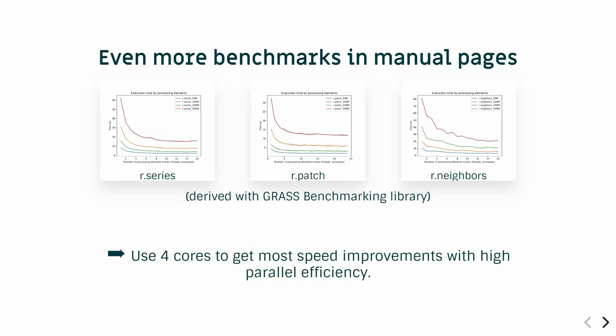There are even more benchmarks in the manual pages of the tools I showed earlier — feel free to look at those. They can be helpful when deciding how to distribute your cores among different parallel computations. These benchmarks were generated with the GRASS benchmarking library, so you can use that library to experiment yourself. Overall, because all these modules use different algorithms, how they scale depends on the particular implementation. But for computation on a laptop with not-huge data, four cores is typically where you get the most out of parallelization.